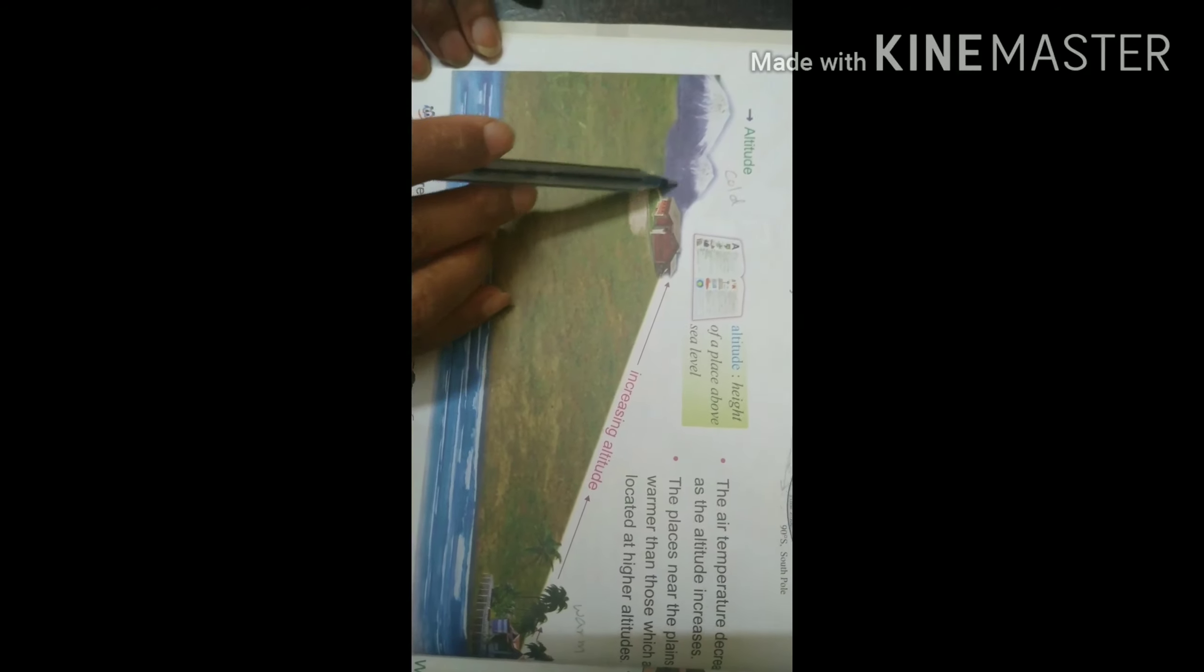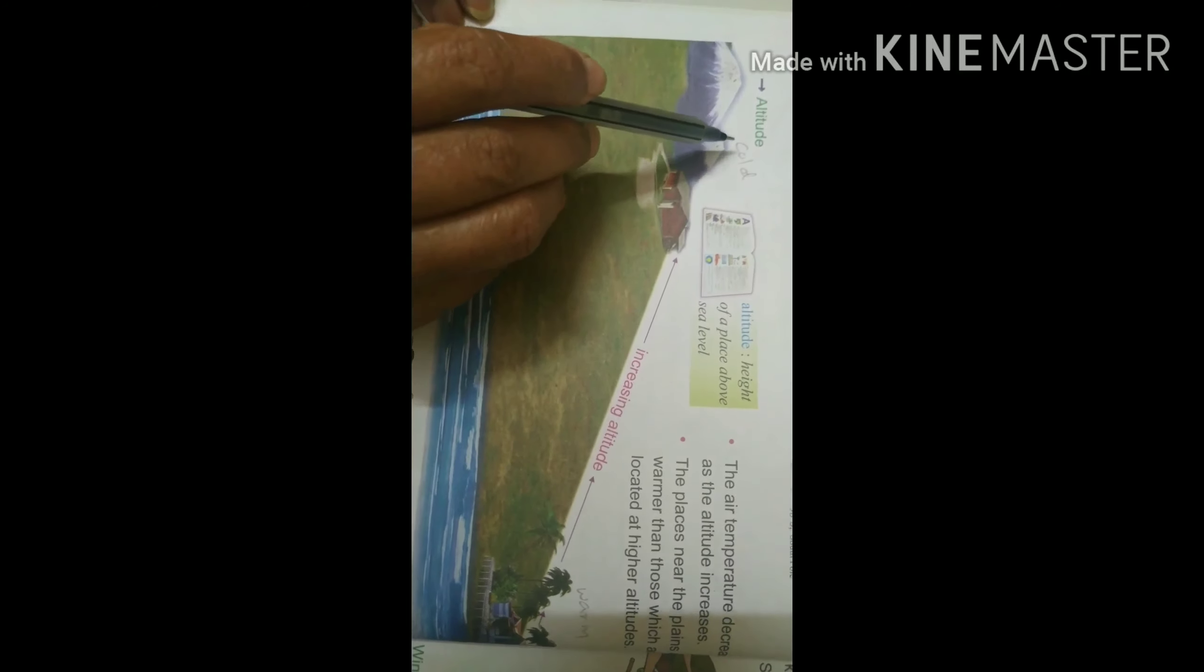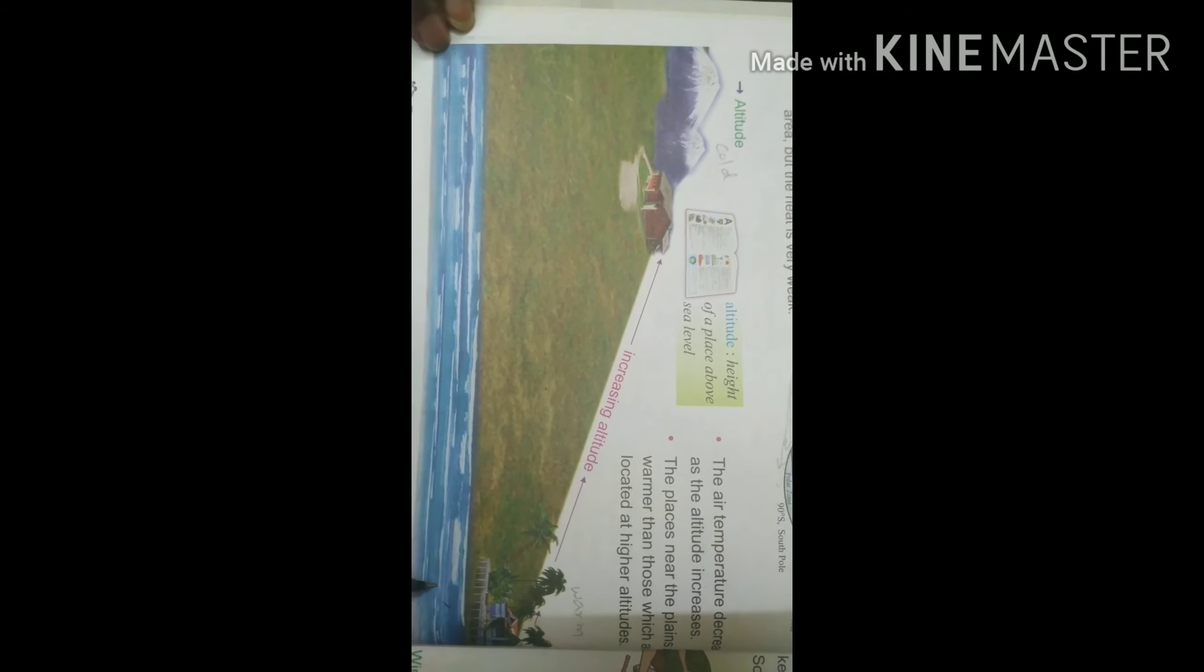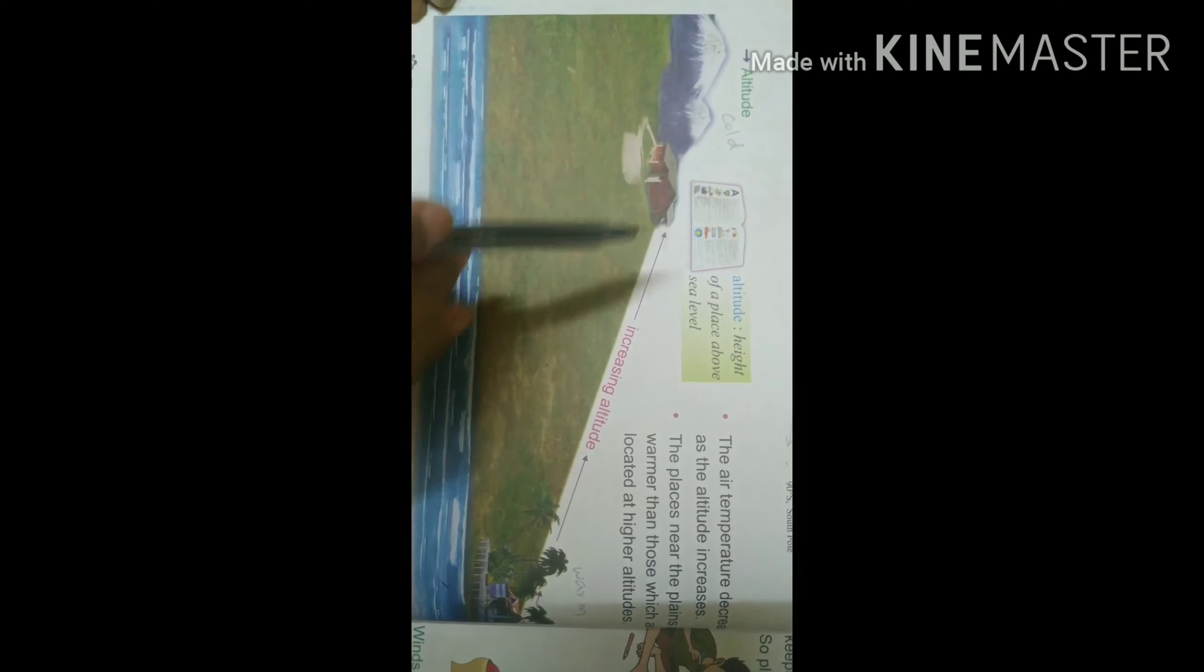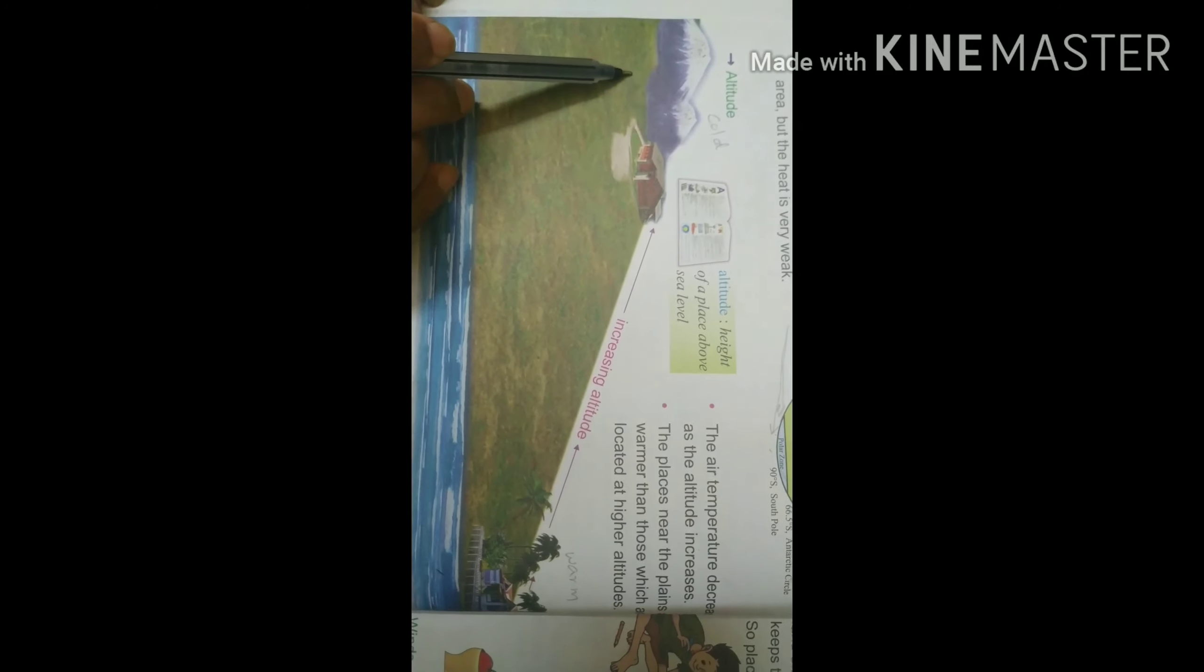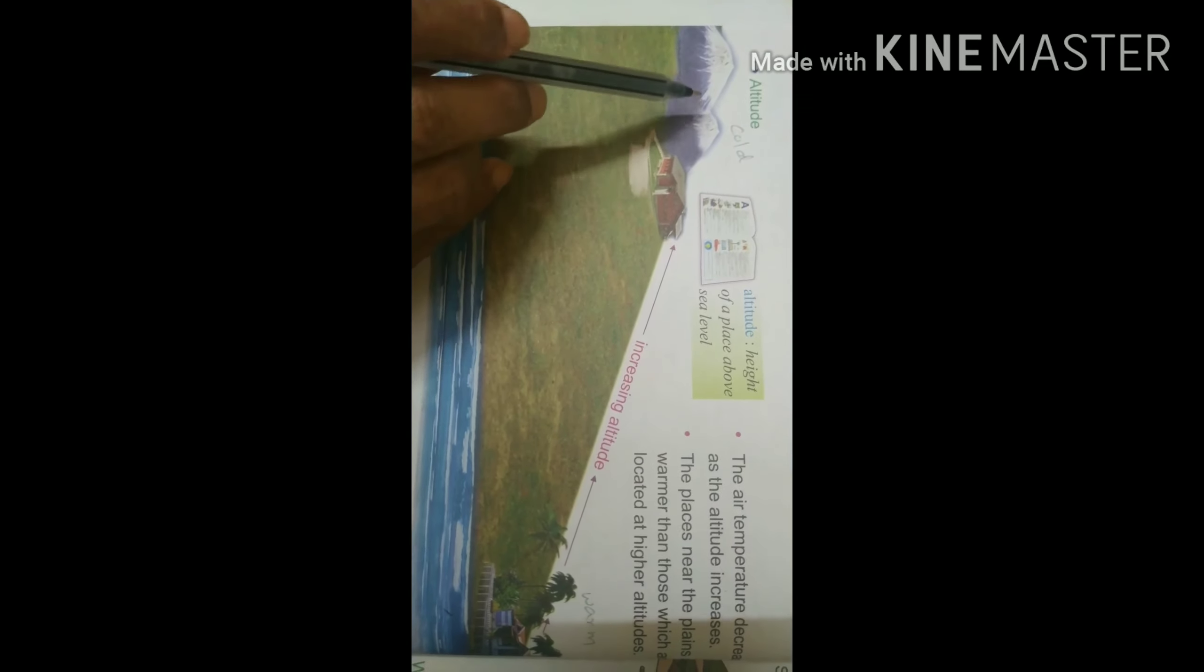Now discussing altitude. Altitude is the increasing height where the atmosphere or climate is cooler than the area near the sea. Here you can see sea and land. Air temperature decreases as altitude increases. Altitude is the height of a place above sea level. The places near the plains are warmer than those located at higher altitude. You can see here the place or land near sea level or at the plains are warmer than the altitudes.